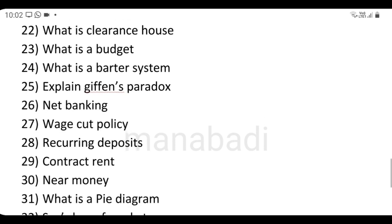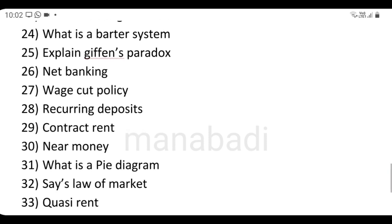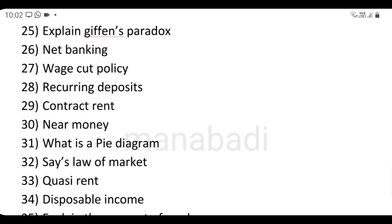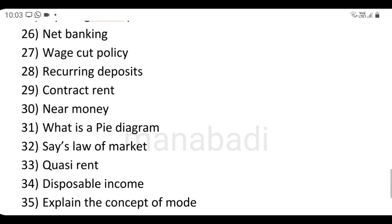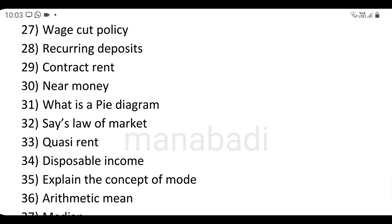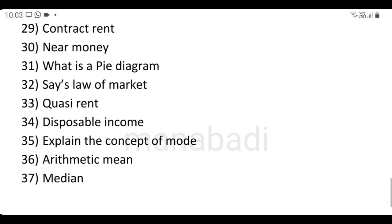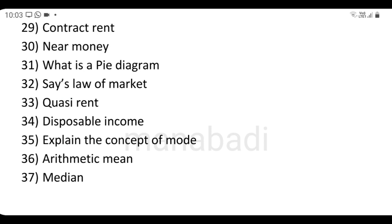What is barter system? Before money system, barter system was there. Explain Giffen's paradox. Net banking. Wage cut policy. Recurring deposits. Wage cut policy is when a company reduces salaries instead of firing employees. Contract rent, types of rents, choose one. Near money. What is a pie diagram? Say's law of market. Quasi rent. Disposable income.